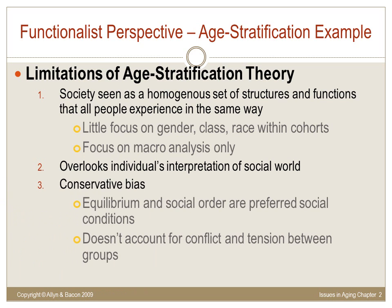Lastly, functionalist theories have a conservative bias. Since functionalism sees equilibrium and social order as the preferred social condition, it fails to account for conflict and tension between groups or issues of power. Race, gender, and class create unequal access to situations needed for success in life. The conflicts, power issues, and inequality constructs shape people's lives and their aging process. Unequal access to healthcare may say more about poor health than the age cohort someone is born into.